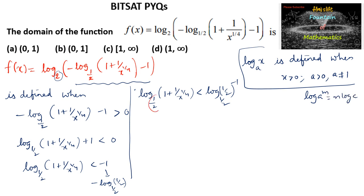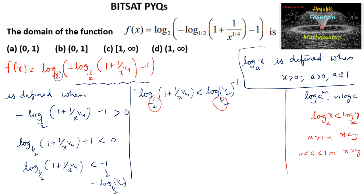Since the base 1/2 lies between 0 and 1, when log_a(x) < log_a(y) with 0 < a < 1, the inequality reverses and we get x greater than y. So we can write (1 + 1/x)^(1/4) is greater than (1/2)^(−1), which equals 2.